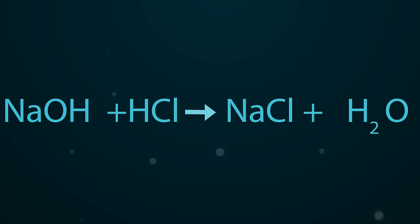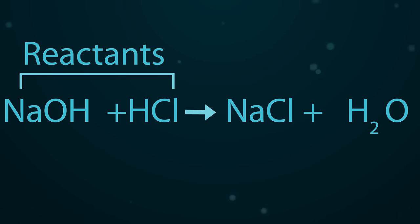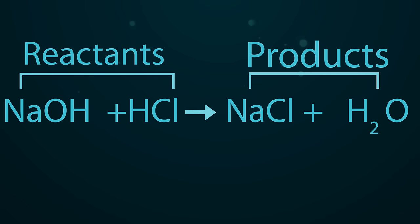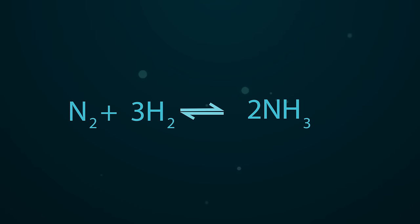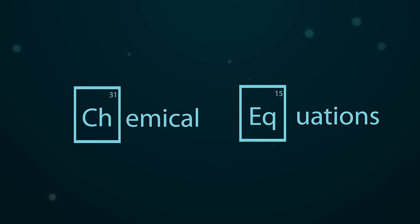And so to summarize, a chemical equation shows the overall chemical change of reactants into products. We usually write reactants on the left of the arrow and products on the right. A single arrow means that the reaction is irreversible, and two oppositely pointing half arrows means the reaction is reversible. And that completes our overview of chemical equations.